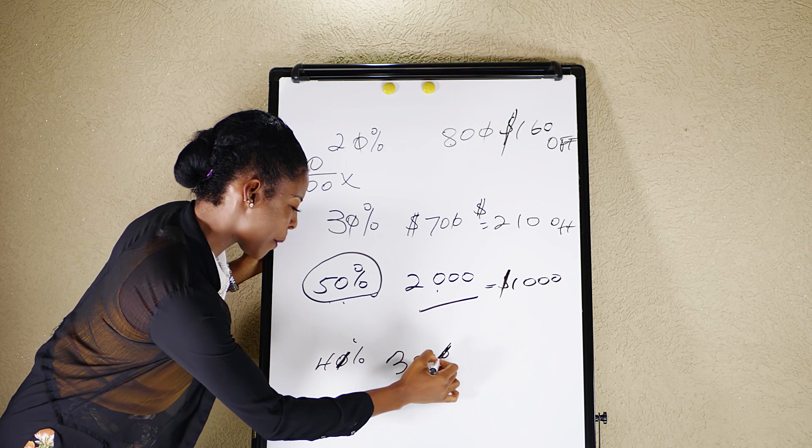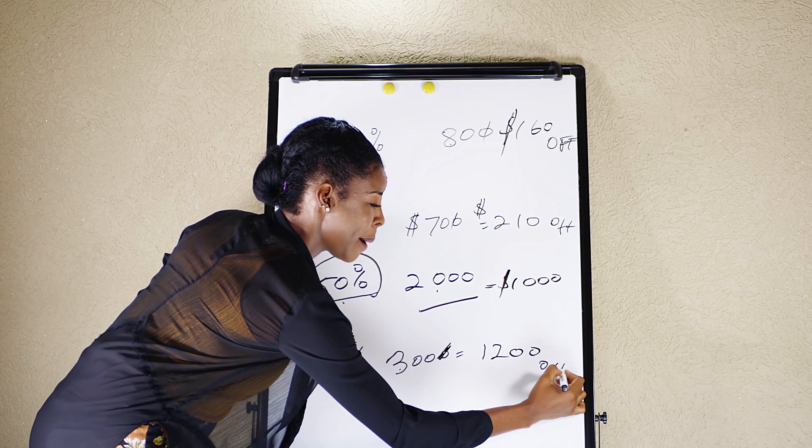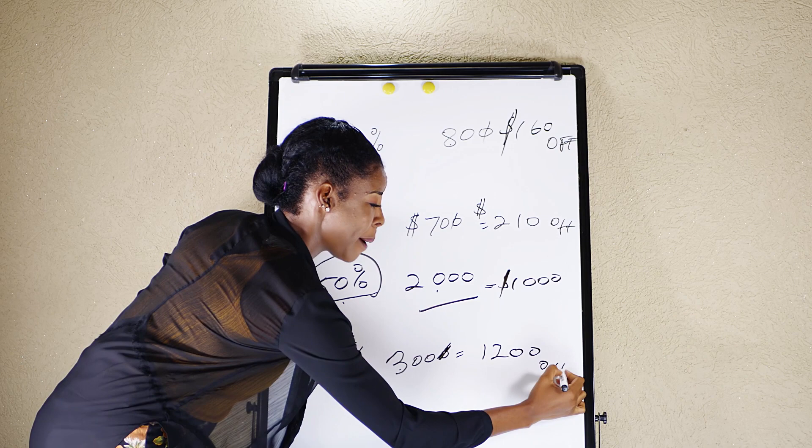So we're taking this off here and we're taking this off here. 4 times 3, and no, grandma works fast. And you get 12. And bring the two zeros. So actually, she is getting how much off? Ka-ching! $1,200 off.